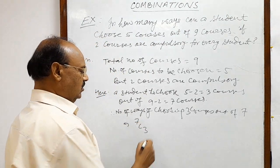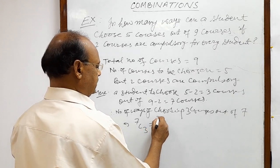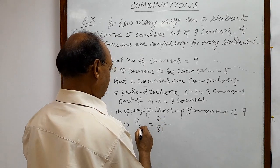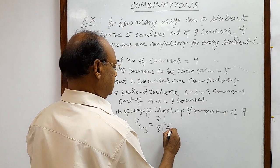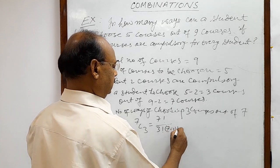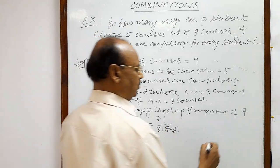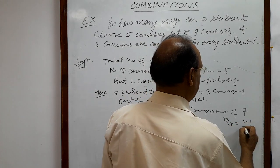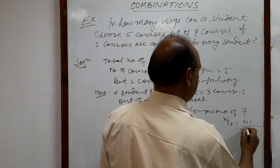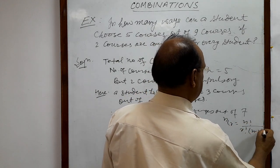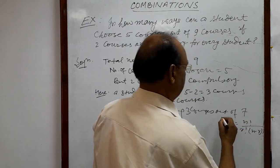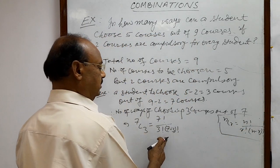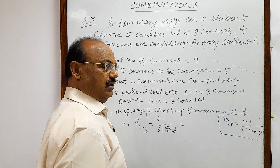This is equal to seven factorial divided by three factorial into (seven minus three) factorial. We know the formula: nCr equals n factorial upon r factorial times (n minus r) factorial. By this formula we can write this expression, and now let us simplify to get the result.